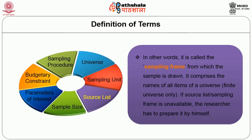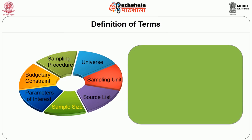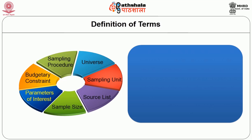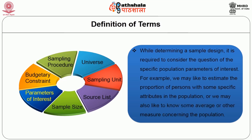If the source list or sampling frame is unavailable, the researcher has to prepare it by himself. Sample size: this is the number of items selected from the universe, constituting a sample. The sample size should not be too large or too small, but optimum. An optimum sample accomplishes the requirements of efficiency, representativeness, reliability, and flexibility.